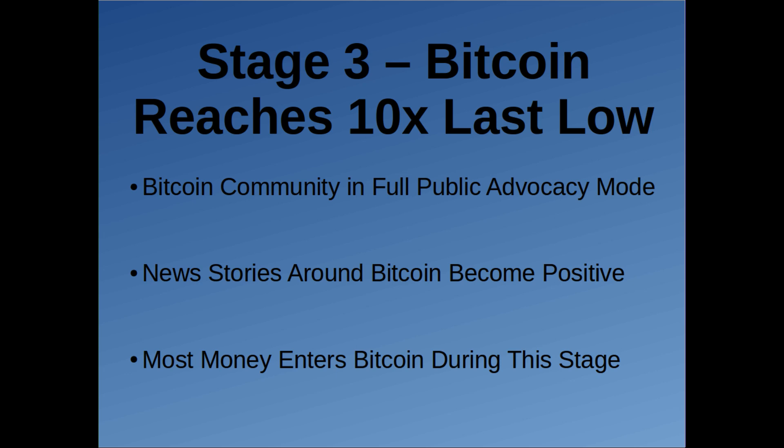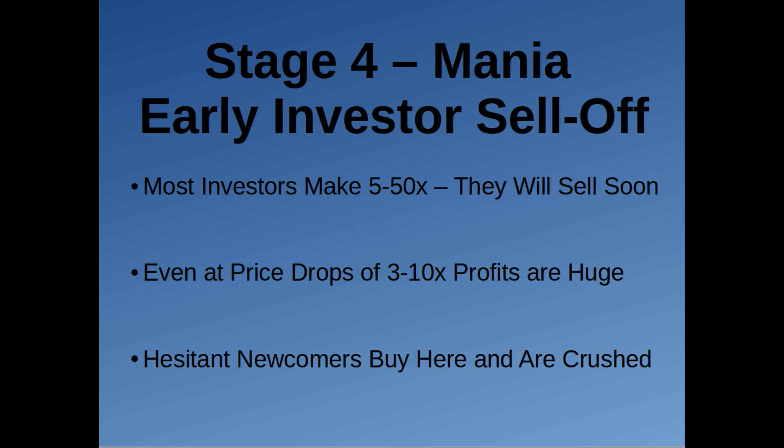Stage 4 starts because a lot of investors start thinking they're not going to buy anymore. But now the confidence has occurred for newcomers, so a lot of newcomers start buying in stage 4. The price has gone up and they hear about all the possibilities Bitcoin can do, and they believe the price can definitely hit $100,000. John McAfee, the security guy, said the price of Bitcoin could hit half a million dollars in three years — and newcomers believe things like that because he's seen as smart. He's a little bit crazy, so he believes what he says.